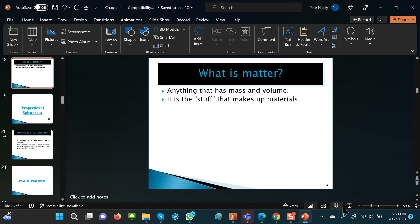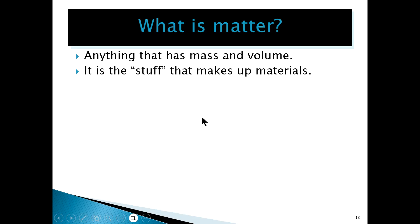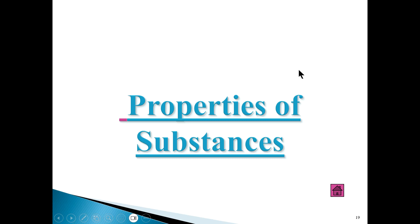We're going to get into a bit of detail in this section about matter and the different forms of it. Matter is anything that has mass and volume — anything that has mass and takes up space. So basically what we're talking about is pretty much anything that makes up materials.